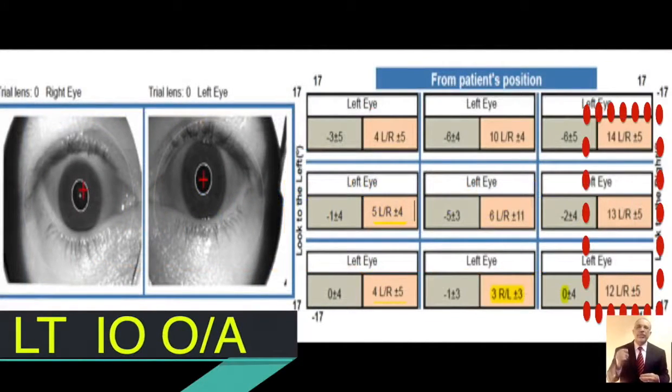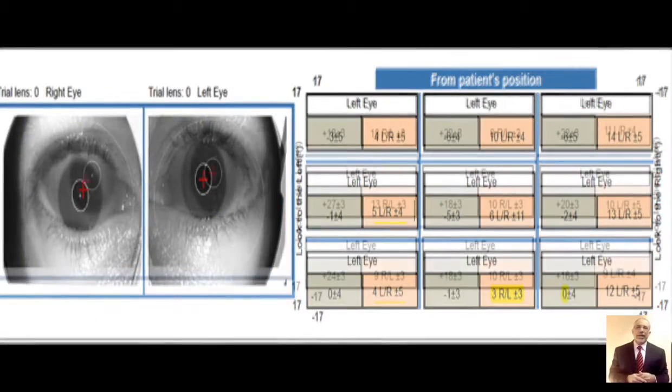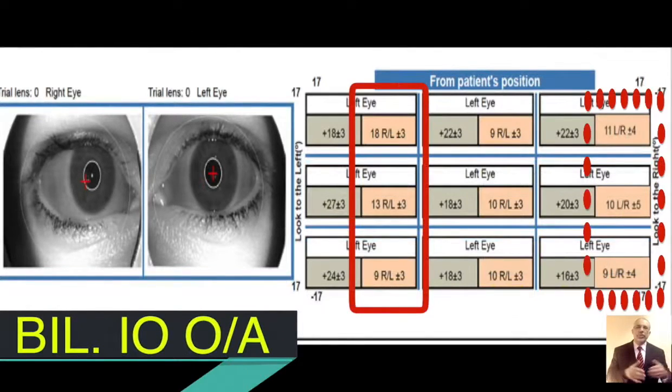Coming back to our results, patients with inferior oblique overaction have hypertropia when they are looking to the opposite side of the gaze. And the patients with bilateral inferior oblique overaction have bilateral hypertropia when they go to both sides.